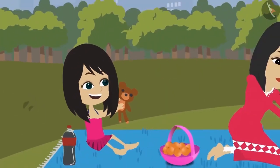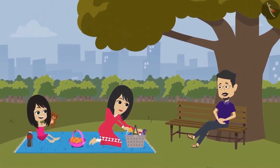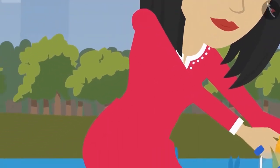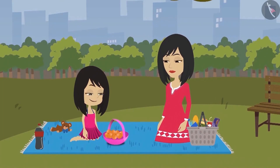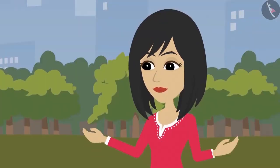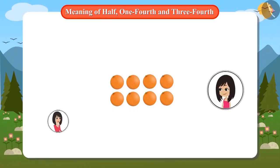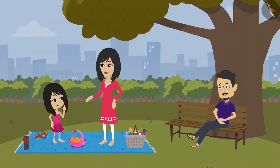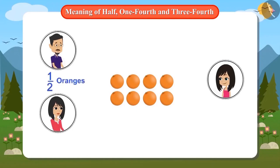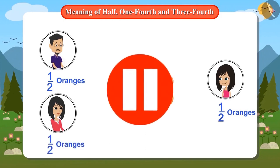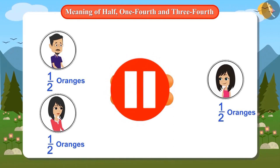Neha is very happy today because she has left for a picnic with her mother and father. Neha's mother has brought oranges along with food. Neha thinks about how she will be able to eat so many oranges. She asks her mother what so many oranges are for. Mummy tells her that all these oranges are for three people — Neha, mummy, and papa. Mummy asks Neha to divide the oranges among the three people by herself. She tells mother that she will give half to father, keep half for herself, and give half for her mother. Stop this video and think if the oranges can be divided in half by three people.